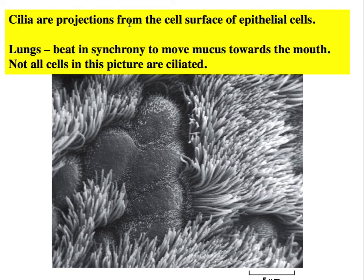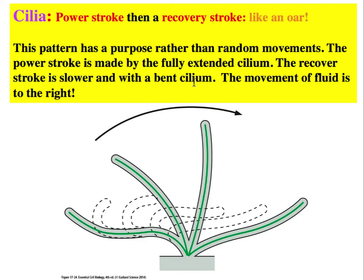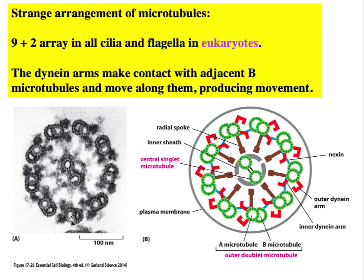Cilia are projections that emerge from the surface of cells and are covered in plasma membrane, with microtubules inside. In the human lung, some cells have cilia and others do not. Cilia beat through a cycle: during the power stroke they are strong and erect; during the recovery stroke they are flimsy and folded. Each cilium has a 9+2 array — 9 microtubule doublets plus 2 single central microtubules — along with other proteins necessary for cilia formation.